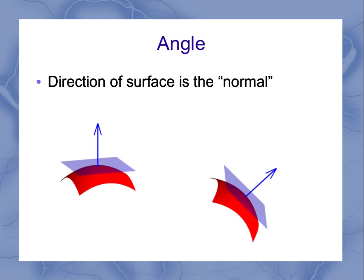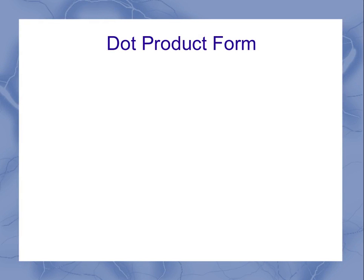Now another way to represent this same equation here and to include both the electric field, area, and the angle, I could use the vector form called the dot product. And in this case the way I would read this equation is E dot A, so it's the dot product between the electric field and the area.